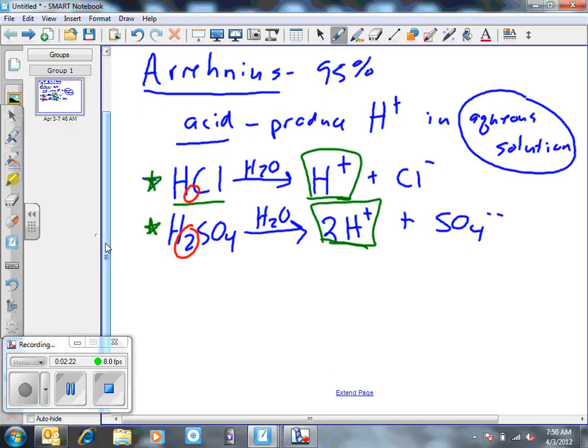Another common acid is the nitric acid we have here. Put that in water, and you'll see that we get a proton plus a negative ion. That's the Arrhenius acid.